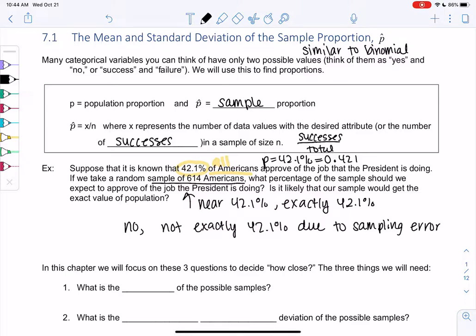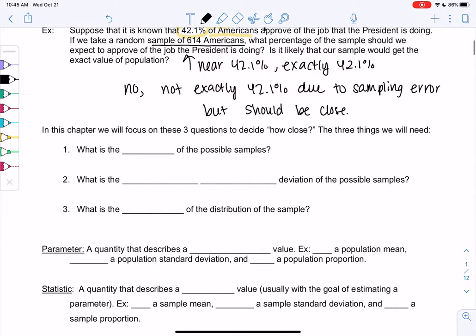And that's what this whole chapter will be about. So to answer how close, we'll focus on three questions to decide how close. First, what's the mean of the possible samples? What's the standard deviation? These are things that have been important to us. What is the standard deviation of the possible samples? And then what is the shape of the distribution? Because if we can get that normal shape, then we can find probabilities. We like the normal curve because we know how to find area.